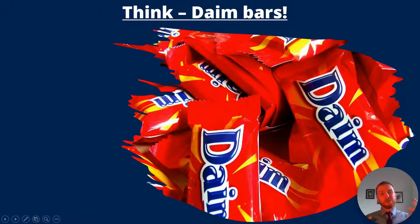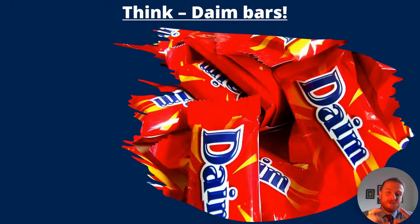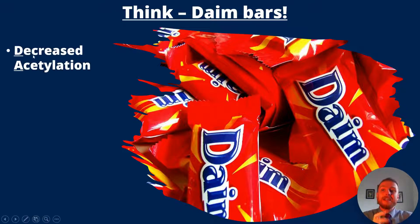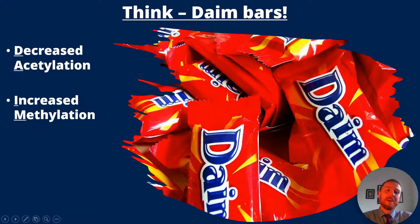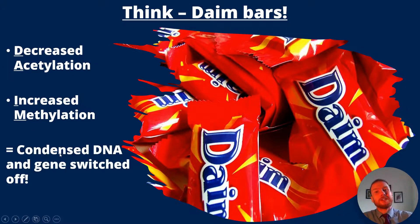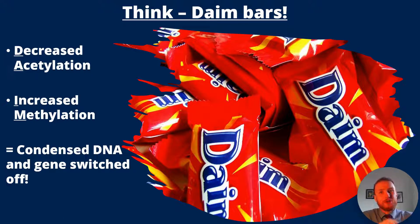This is where my favourite mnemonic — dime bars — really helps students, because this is a tricky topic. Decreased acetylation (DA) or increased methylation (IN) are going to condense the DNA and switch the gene off. Just remember that DIME bars switch off genes and you'll be absolutely set in the exam.